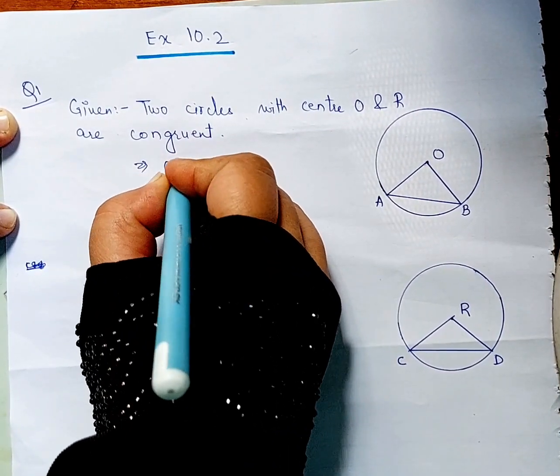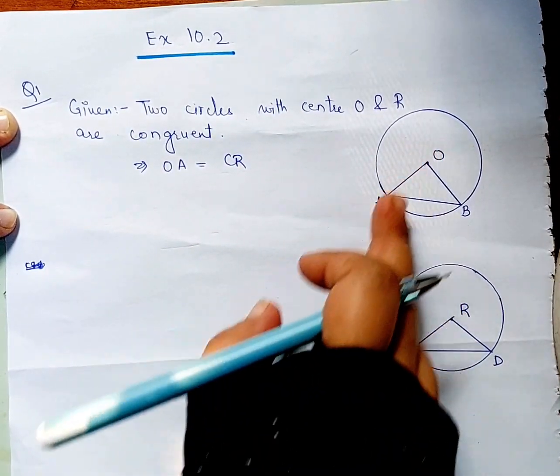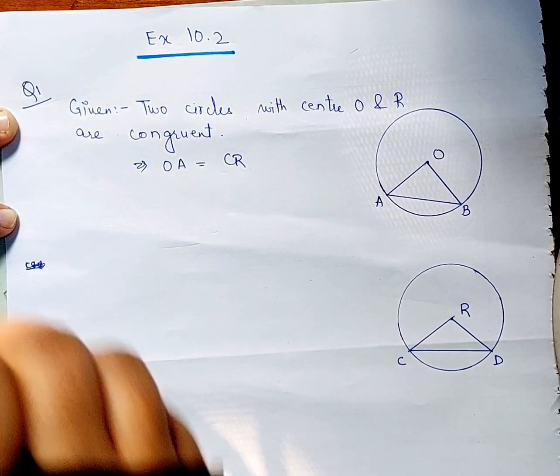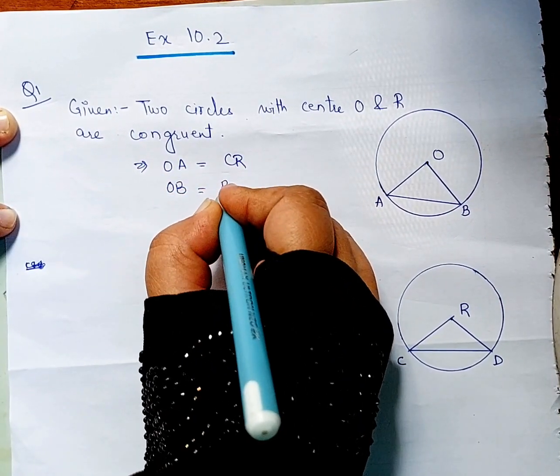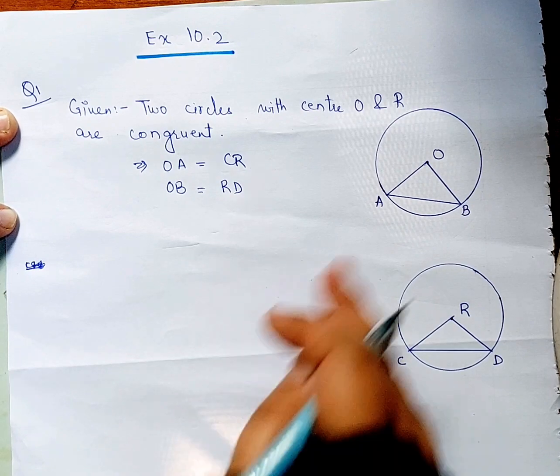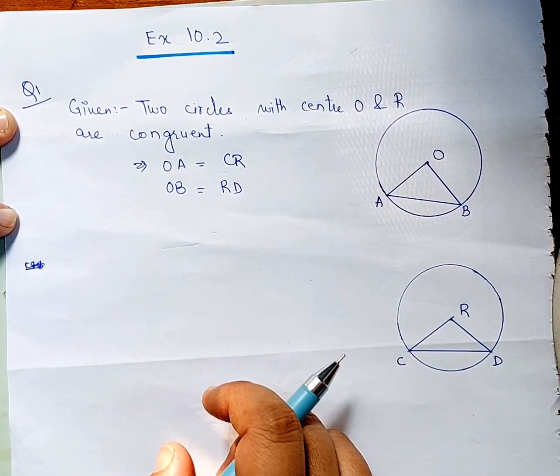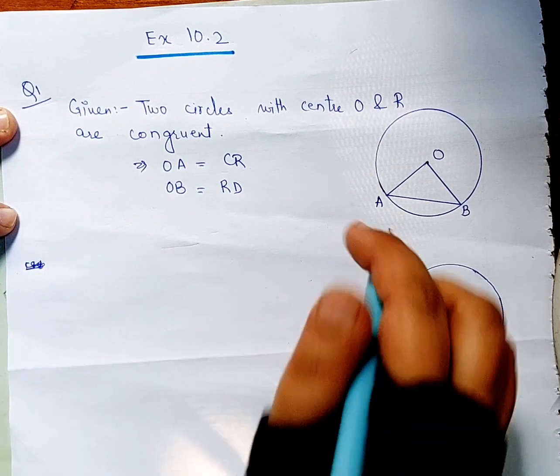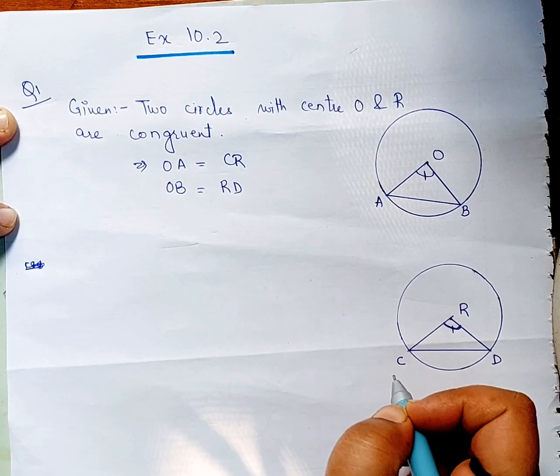The radius OA is equal to CR. OB is equal to RD. Clear, OB is equal to RD. Because congruent circles have same radius. Now you have to prove that this angle is equal to this angle.